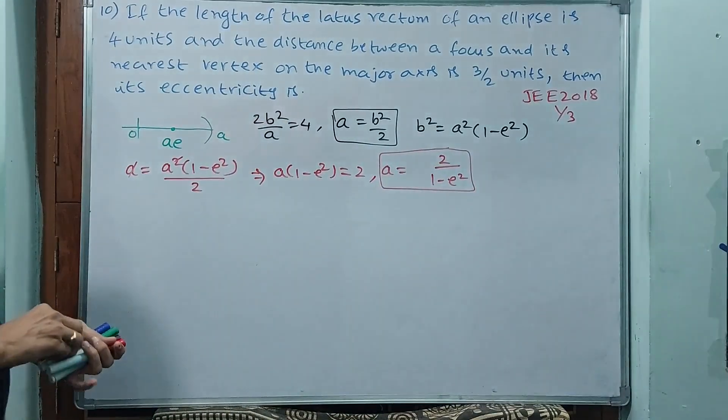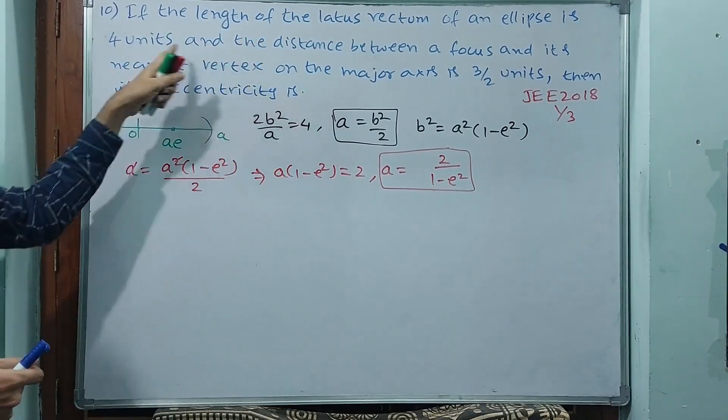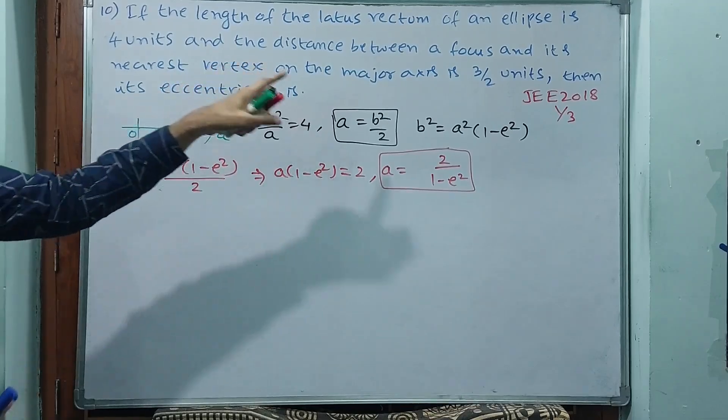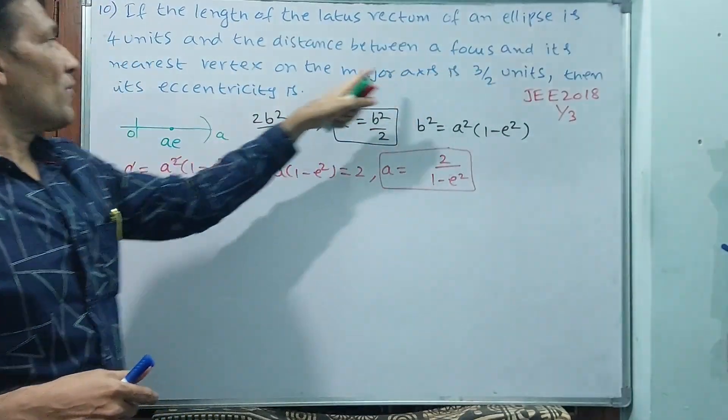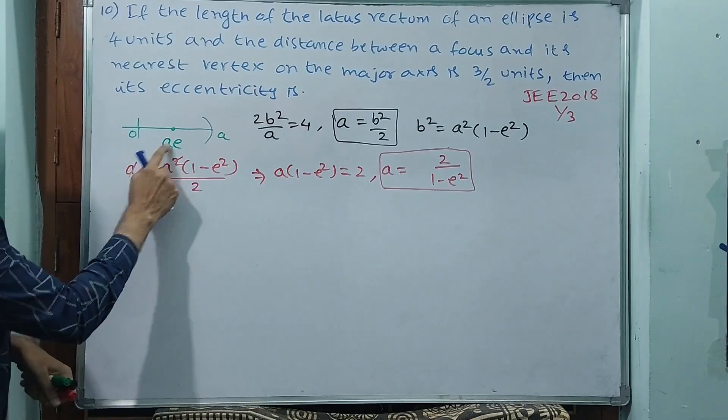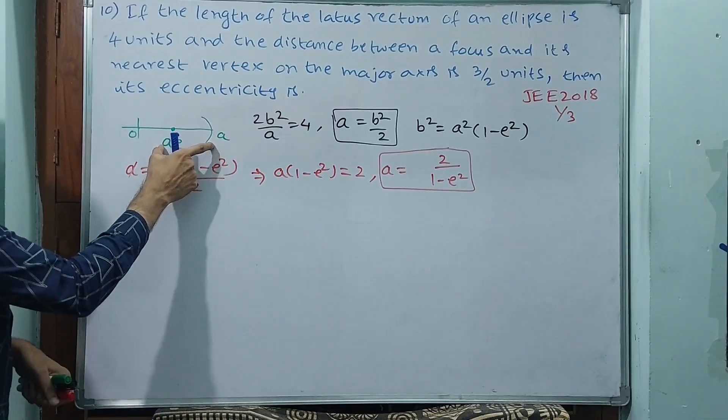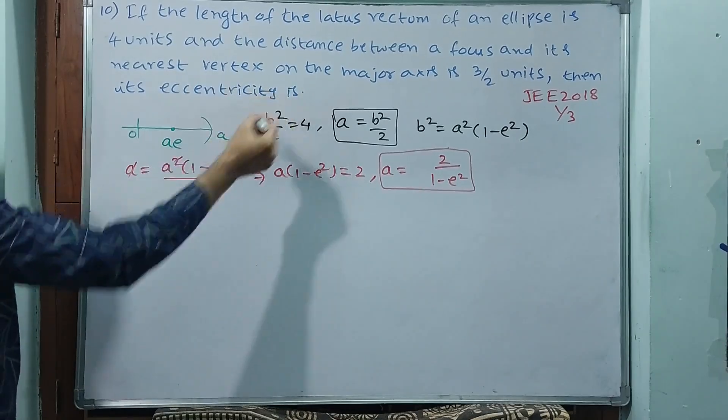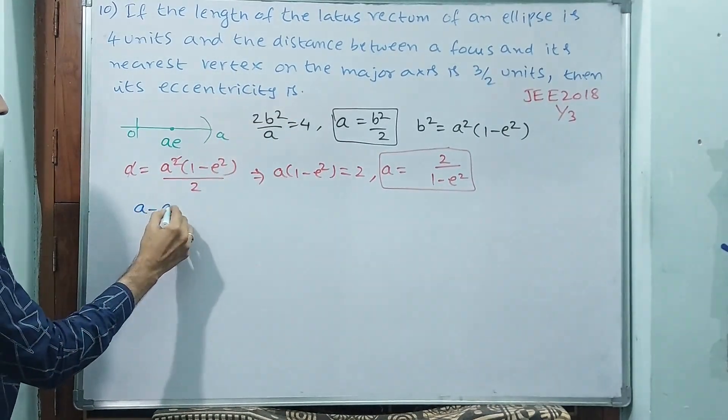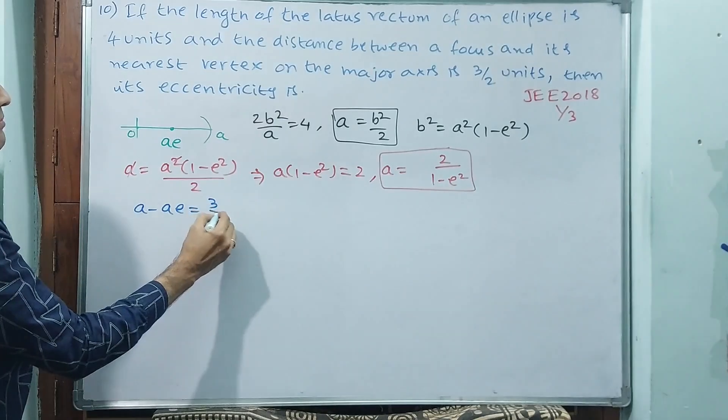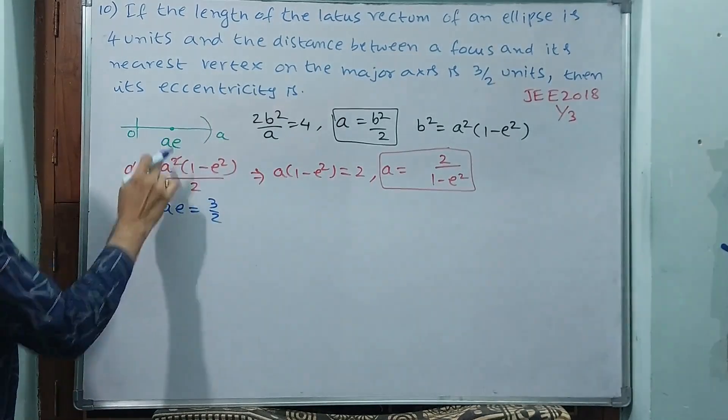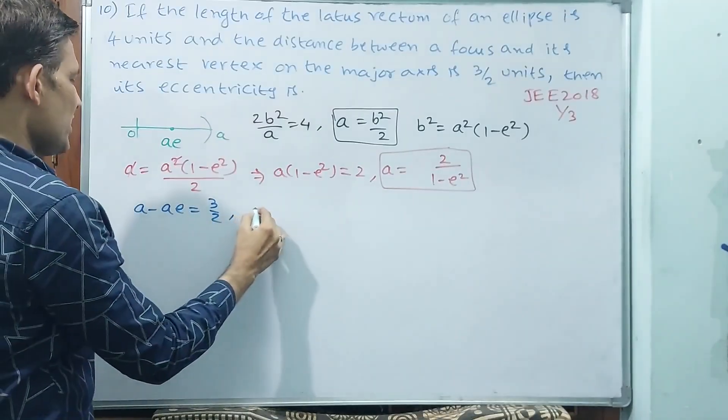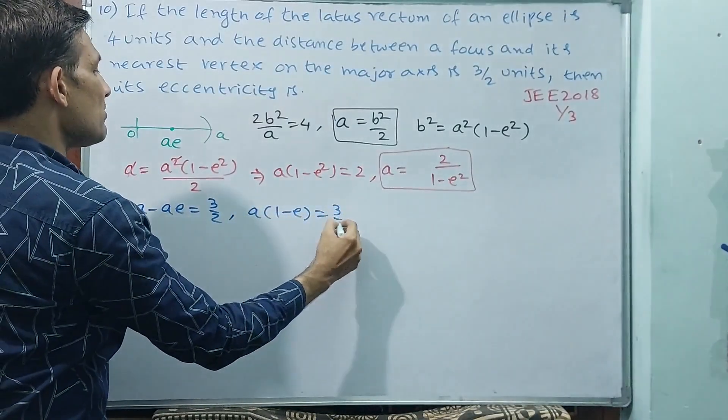Now go back. Length of the latus rectum of an ellipse is 4 units, that is one thing. Another thing, distance between focus and its nearest vertex on major axis, this is 3 by 2 units. You take this point now. That means a minus ae is equal to 3 by 2. Now you take common a. a if I take a common, 1 minus e is equal to 3 by 2.